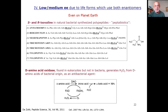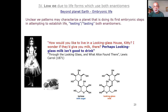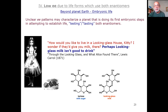We must also consider the situation of low or medium enantiomeric excess due to life forms that use both enantiomers. On planet Earth we already have this. There are many examples, including isovaline in both right- and left-handed forms. This situation can of course happen elsewhere — for instance, if the life on that remote planet is embryonic life. An unclear enantiomeric excess pattern may characterize a planet making its first embryonic steps in an attempt to establish life.